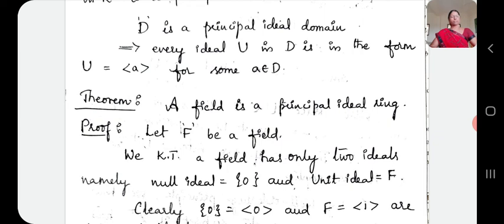Now let us consider a simple theorem. This theorem just uses the definitions we already discussed and proved. The theorem statement is: a field is a principal ideal ring. When you hear the theorem statement, you should be able to recollect the proof step by step and link it easily.